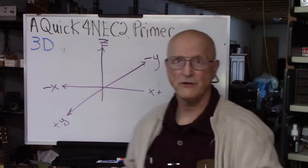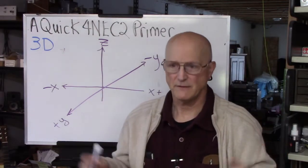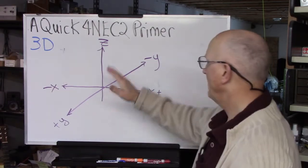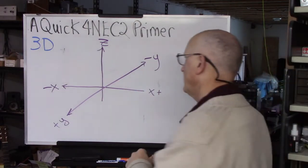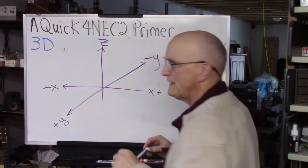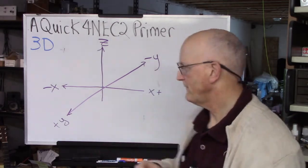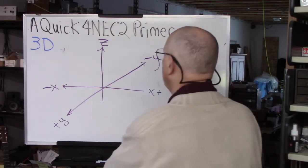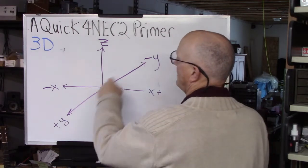And so when you are planning the model for your antenna you have to think in three directions. Now one of the things that makes it easy is if you plan your antenna so that it is along one of the axes.